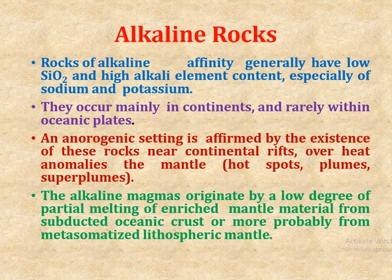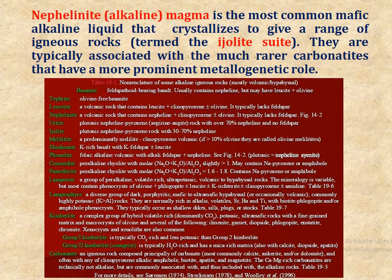The alkaline magma originated by a low degree of partial melting of enriched mantle material from subducted oceanic crust, or more probably from metasomatized lithospheric mantle. Nephelinite or alkaline magma is the most common mafic alkaline liquid that crystallizes to give a range of igneous rocks termed the ijolite suite. They are typically associated with much rarer carbonatite, which has a major prominent metallogenetic role.